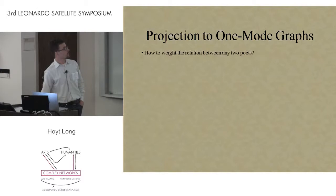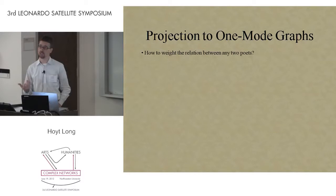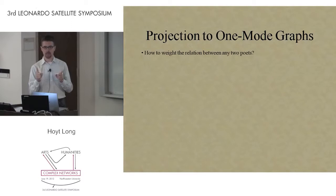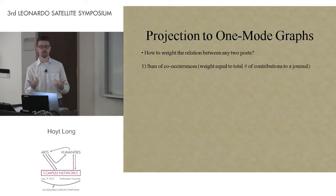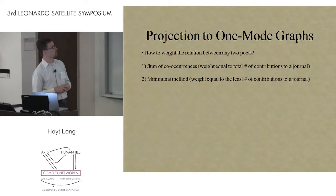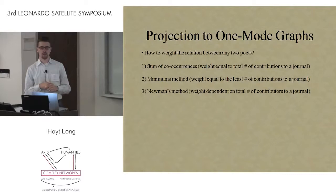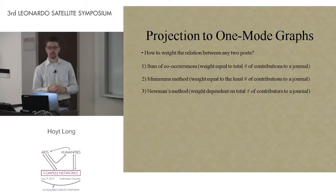We're also interested in the question of projection—and this is actually a very humanist question. When you want to know the value between two poets through the journals, how do we decide what that value should be? How do we weight that relation? Should it be the sum of the number of times they published? Should it be equal to the minimum between them—so if Poet A publishes five and Poet B publishes two, should their connection be two? Or should it be something yet more complex, like Newman's method, which would weight them dependent on the total number of contributions to the journal? We think it's probably closer to something like the third option. We've just been playing around with these different projections.